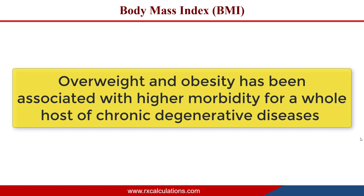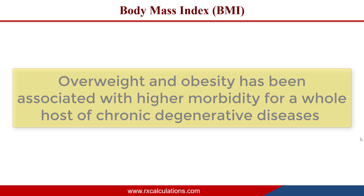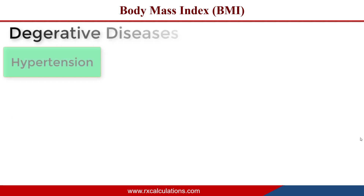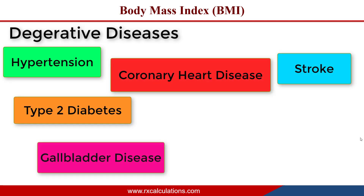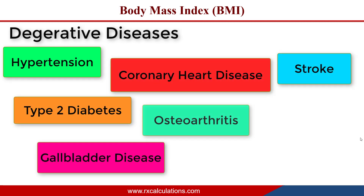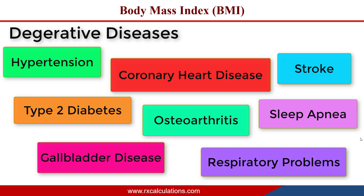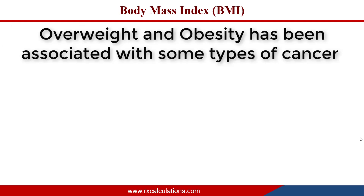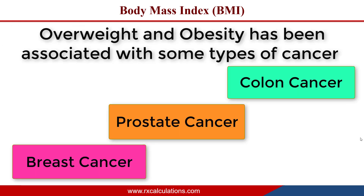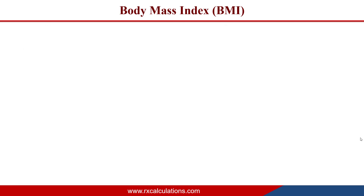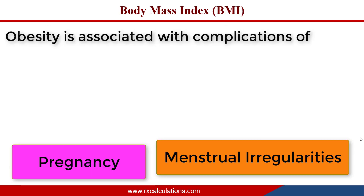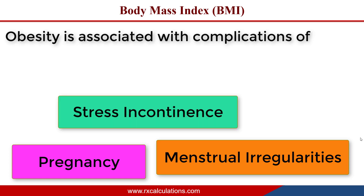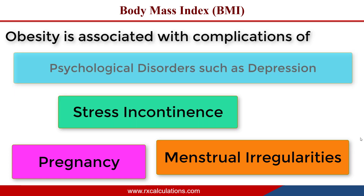Overweight and obesity has been observed to be associated with higher morbidity from a whole host of chronic degenerative diseases such as hypertension, type 2 diabetes, coronary heart disease, stroke, gallbladder disease, osteoarthritis, sleep apnea, and respiratory problems. It's also been associated with some types of cancer such as breast, prostate, and colon, as well as complications of pregnancy, menstrual irregularities, stress incontinence, and psychological disorders such as depression.